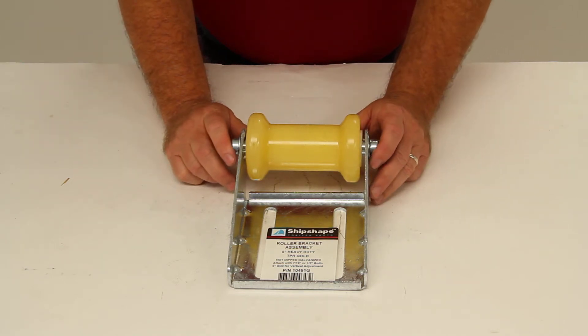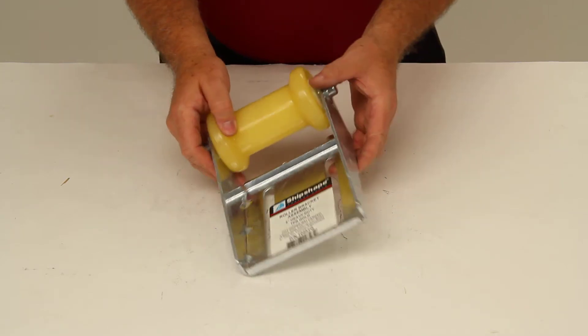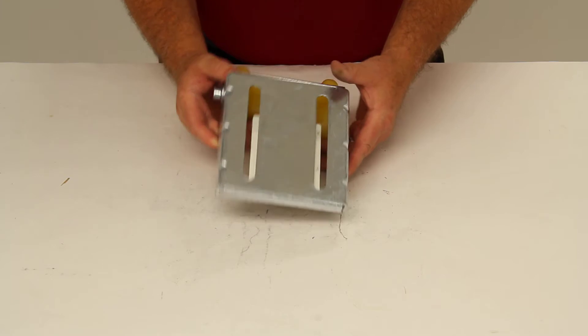Today we're going to review part number CE10451G. This is the CE Smith spool roller assembly for boat trailers.